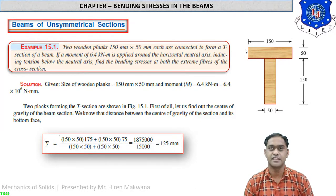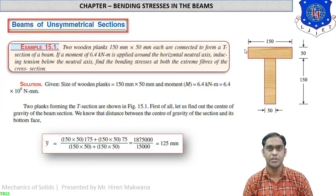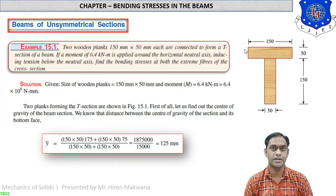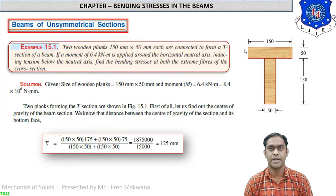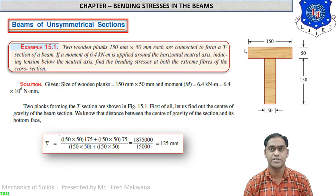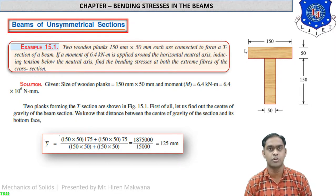Beams of unsymmetrical sections are not as straightforward. For example, a T-section is an unsymmetrical figure, so you have to calculate the center of gravity, the distance of the top layer from the CG, and the bottom layer from the CG. Furthermore, you calculate the moment of inertia of part 1 and part 2 separately, then add them for the total moment of inertia. We calculate CG first, then moment of inertia, then apply σ = M/Z × y to find bending stress at the top and bottom layers.